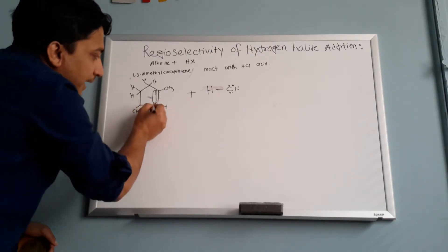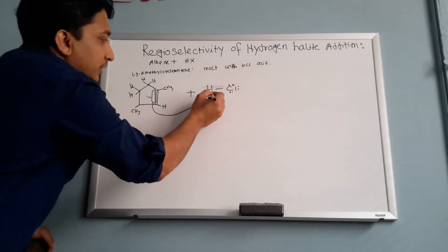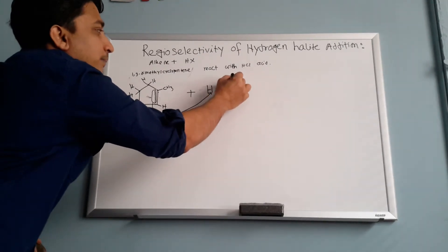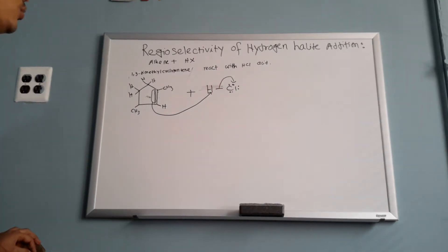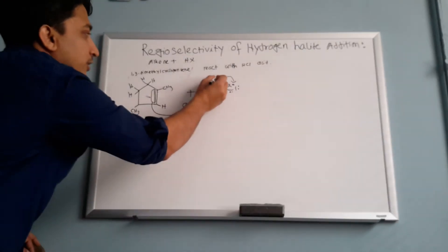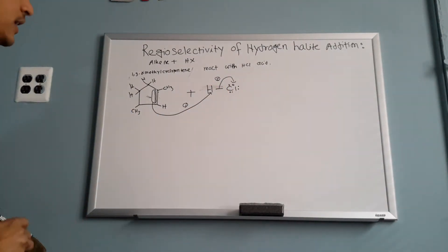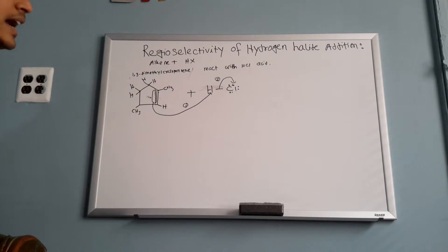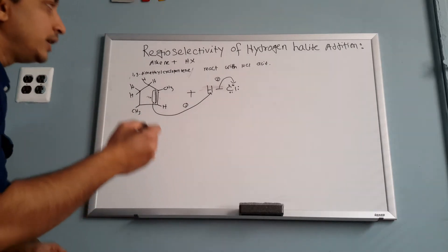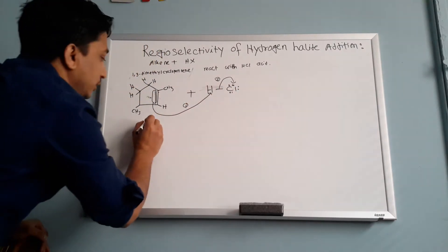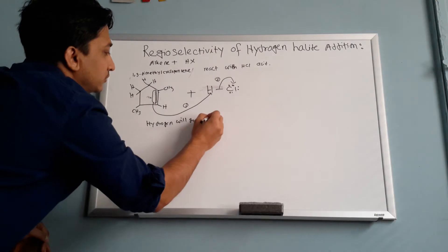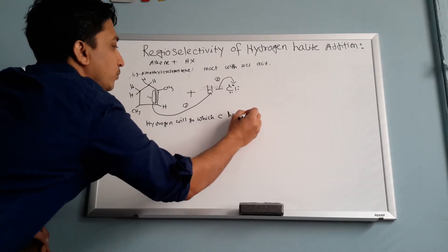This pi bond is going to attack this hydrogen. When the pi bond attacks the hydrogen, automatically the chlorine breaks off and chlorine accepts two electrons, becoming negatively charged. That is motion one and motion two. Now the key question: which carbon is going to get the hydrogen? The guy's name is Markovnikov. Markovnikov's rule says hydrogen will go to which carbon has more hydrogen.